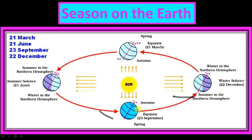After another 3 months, sun rays fall directly on the equator again — day and night are equal, this is equinox. Then after 3 more months, the northern hemisphere is far from the sun and sun rays fall directly on the Tropic of Capricorn. The hemisphere facing the sun directly will have summer, while the one far from the sun will have winter.